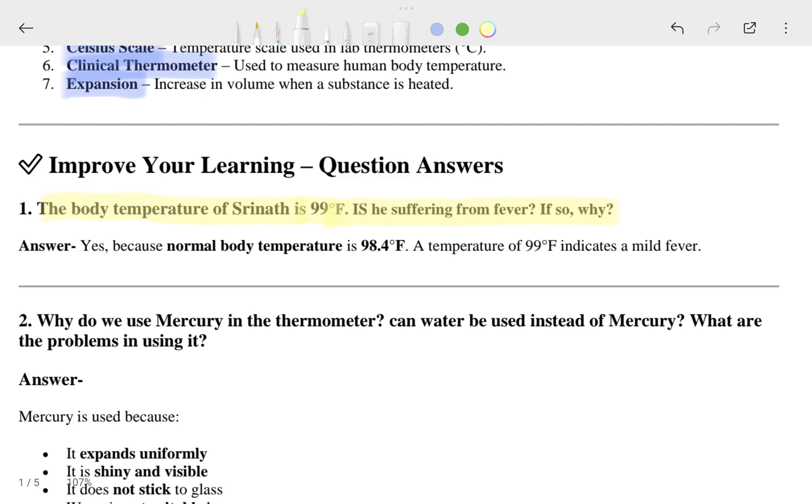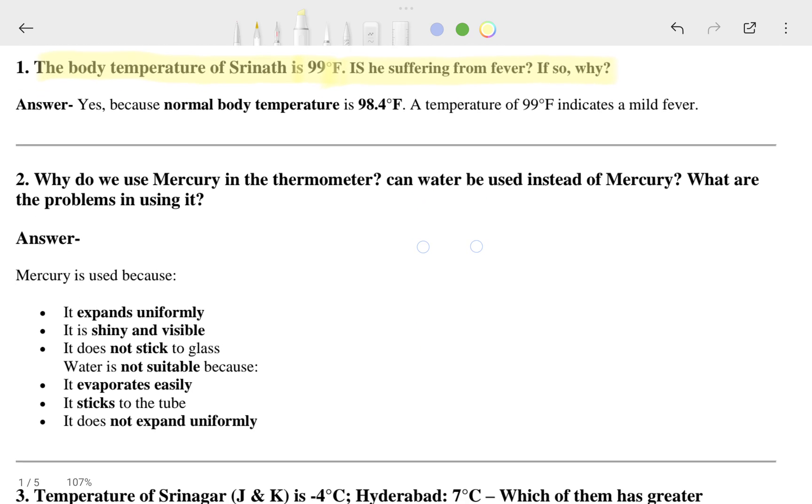Then we will go to the second question: Why do we use mercury in the thermometer? Can water be used instead of mercury? What are the problems in using it? The answer is that mercury is used because it expands uniformly.